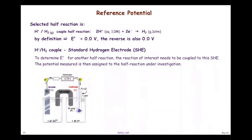The standard reduction potential table is generated by coupling everything to hydrogen, measuring the voltage, and assigning that voltage to the other half-reaction. If hydrogen is zero, then zero plus what makes that voltage? It has to be the chemical you're coupling with hydrogen. For those of you in lab, your experiment has you generating the standard reduction potential of five metals, using copper as your standard.